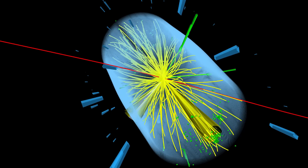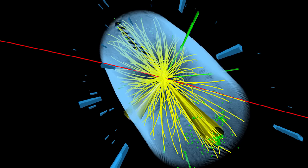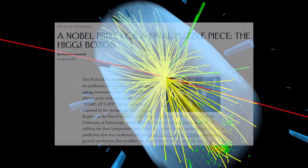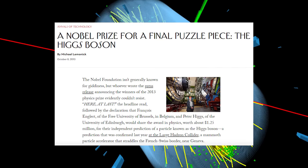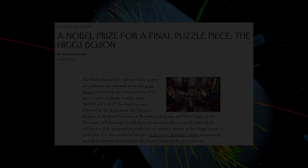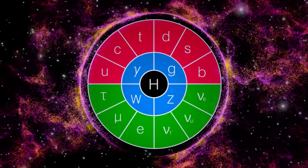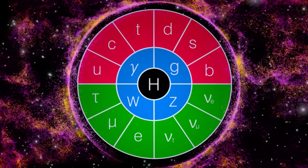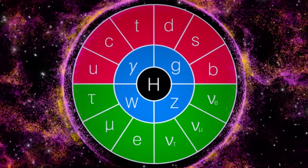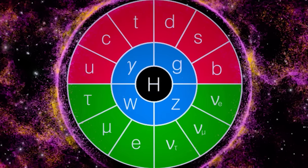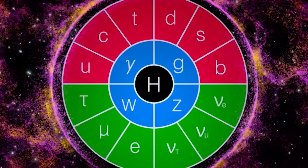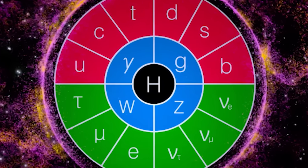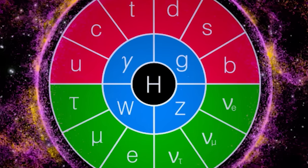We're constantly told that the discovery of the Higgs boson at the Large Hadron Collider was the final missing puzzle piece in the Standard Model. It was the only Standard Model particle we had not seen. It was the completion of a more than a century-long journey of scientific discovery. It was the final jewel in the crown of the theory that best describes nature on the smallest of scales.